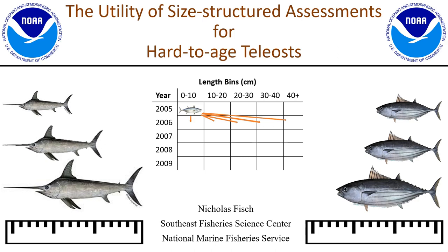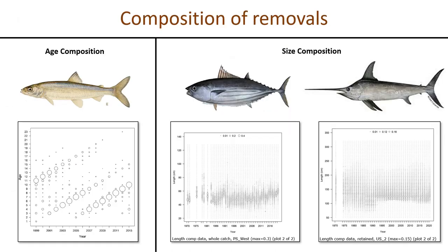I've asked quite a few folks about this but haven't really gotten a concrete answer as to why size-structured assessments aren't more often developed for hard-to-age finfish stocks like tunas and other highly migratories. I'm hoping today to at least generate some discussion around that topic, or come to a conclusion as to why. The idea is as follows: tunas and other highly migratories are pretty hard to age.